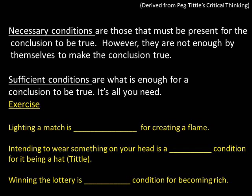Another way to think about it: necessary conditions are those that must be present for the conclusion to be true, but they're not enough by themselves to make it true. Sufficient conditions are what is enough for a conclusion to be true — it's all you need. In the exercise, lighting a match is a sufficient condition for creating a flame, because that's all you need. But it's not necessary because you could also create a flame with a lighter or by rubbing two rocks together.